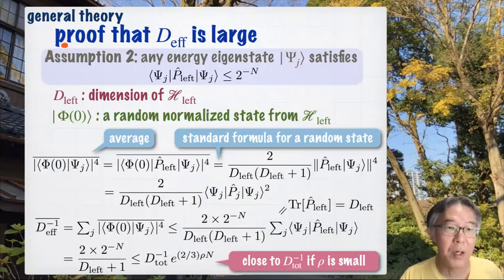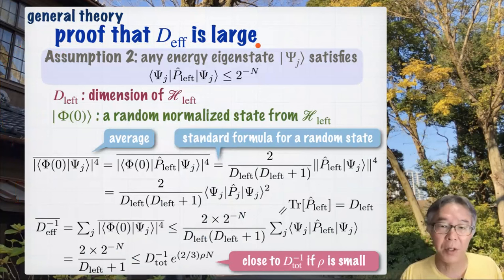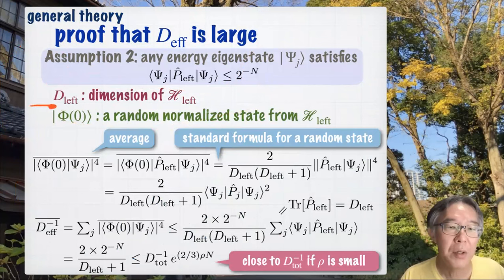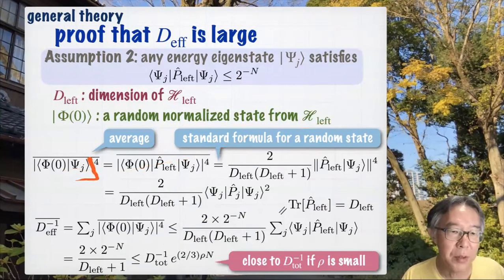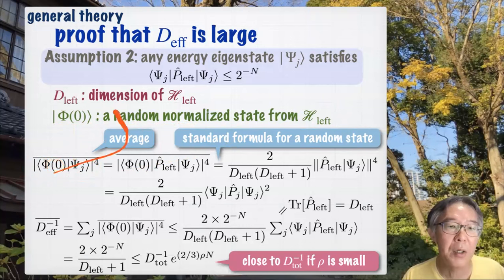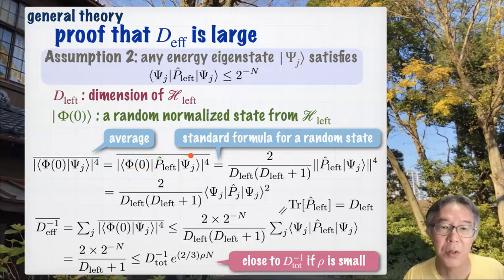In the general theory part, let me explain how we prove that the effective dimension is large. The effective dimension is believed to be large for realistic non-equilibrium states, but it's in general very hard to justify. Here is one way. Our initial state Φ₀ is a random normalized state from H_left. I consider the inner product |⟨ψJ|Φ₀⟩|⁴ and take the average over random choices of Φ₀. Since Φ₀ is from H_left, I can insert the projection operator P_left. This is a standard calculation and there is a standard formula for random state averages, giving an exact form involving the dimension of the Hilbert space.